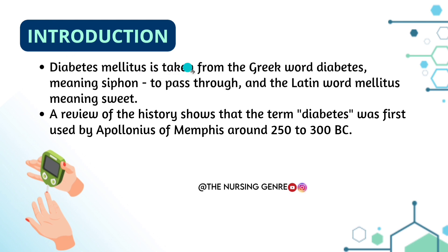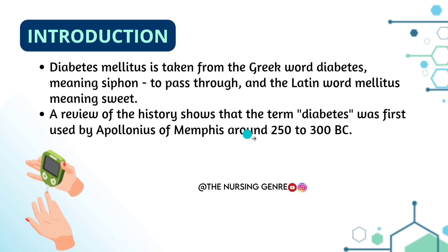First, introduction. Diabetes mellitus is taken from the Greek word 'diabetes' meaning siphon, to pass through, and the Latin word 'mellitus' meaning sweet. So diabetes mellitus was first used by Apollonius of Memphis around 250 to 300 BC.